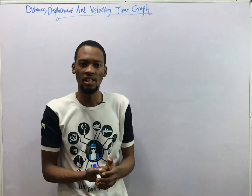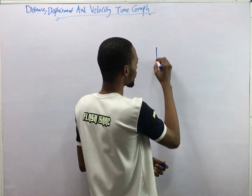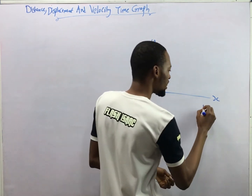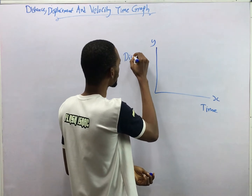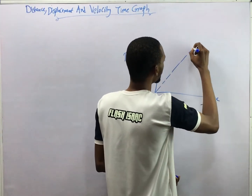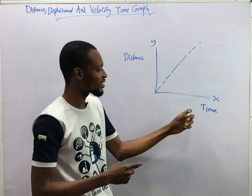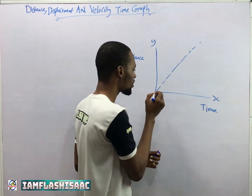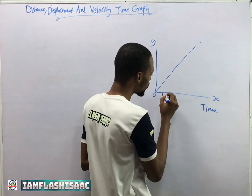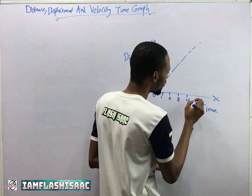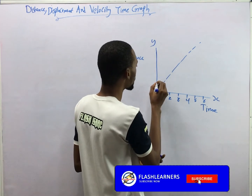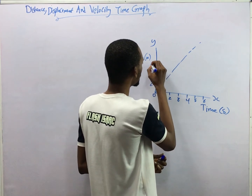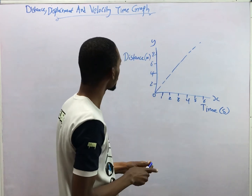We can represent distance, displacement, and velocity in graphs and use them to solve problems. So this is your y-axis and this is your x-axis — let this be your time and let this be your distance. This is simply your distance-time graph: a graph of distance against time. Let's say you are starting from zero. Time goes one, two, three, four, five, six seconds, and distance in meters: two, four, six, eight.